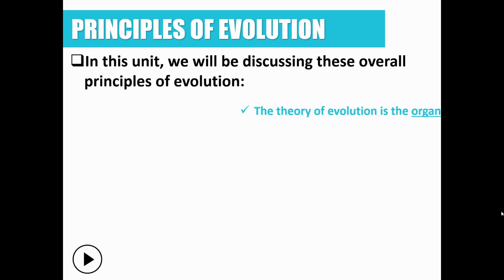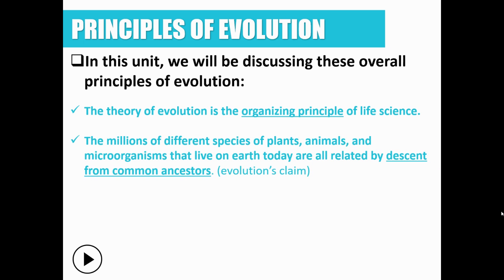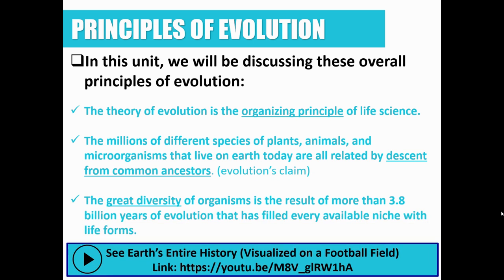In this unit, these are the principles of evolution we'll be discussing. We're going to discuss the theory of evolution as the organizing principle of life science. The millions of different species of plants, animals, and microorganisms that live on Earth today are all related by descent from common ancestors. The great diversity of organisms is the result of more than 3.8 billion years of evolution that has filled every available niche with life forms.